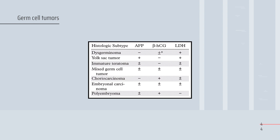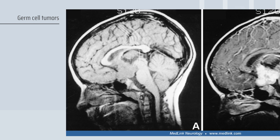All types of germ cell tumors — including embryonal carcinoma — are associated with elevated alpha-fetoprotein, beta-hCG, and LDH. Overall, germ cell tumors are associated with elevation of one or all of these enzymes. On imaging, a pineal or pineal body lesion with enhancement — particularly on the right side — is consistent with germ cell tumors.